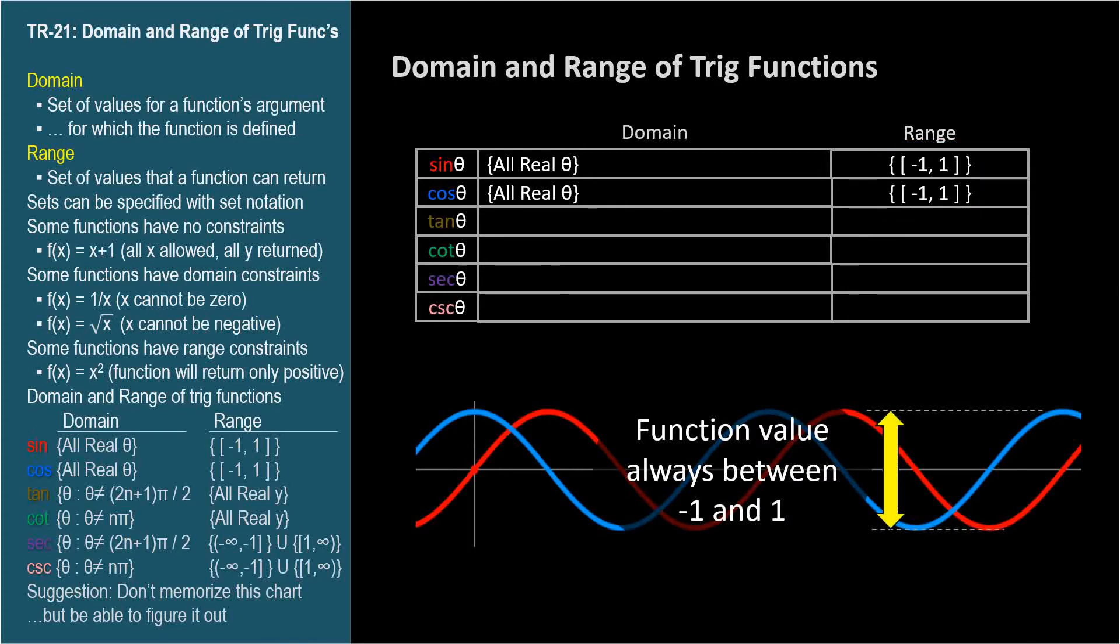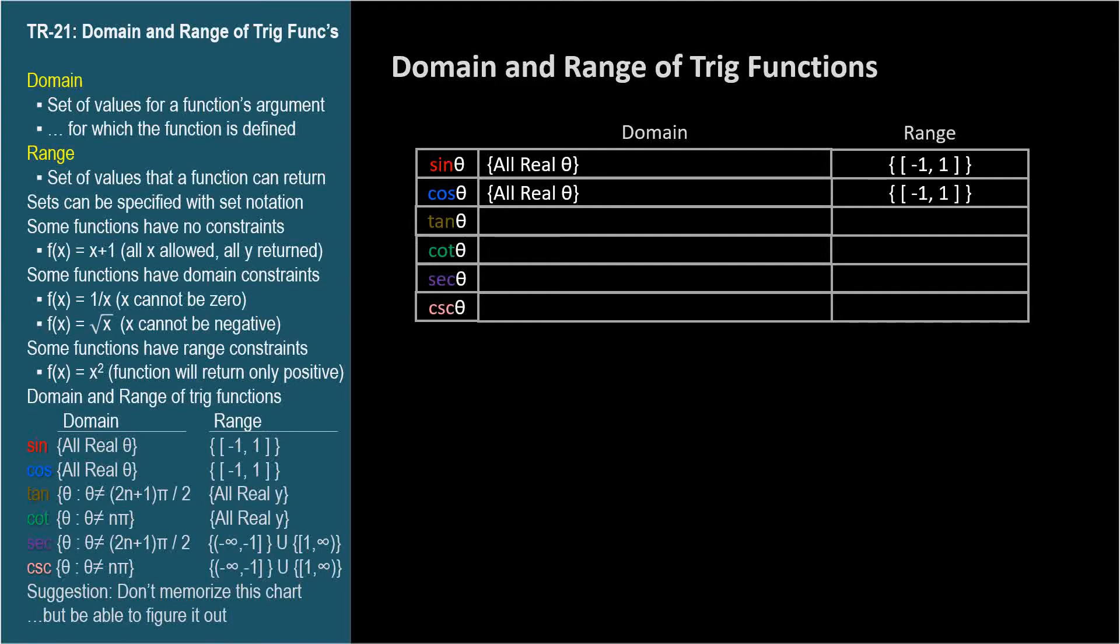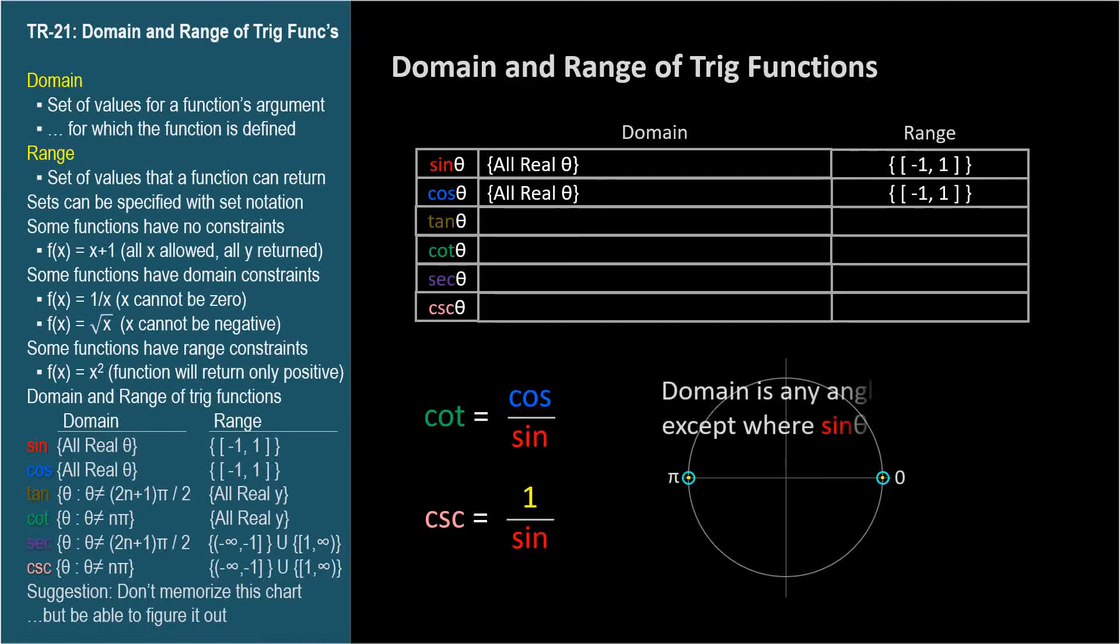The other four trig functions have domain constraints, because they all involve fractions. Let's start with the domain of cotangent and cosecant. Cotangent is cosine over sine, and cosecant is 1 over sine. So these functions are both undefined, that is, they have asymptotes, at angles where the sine is zero, since sine is the denominator.